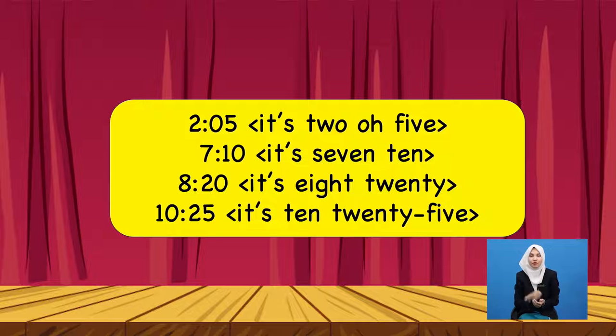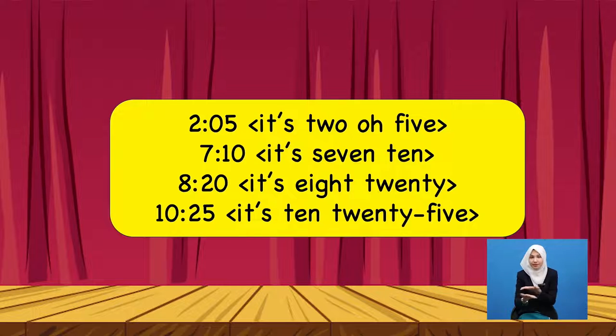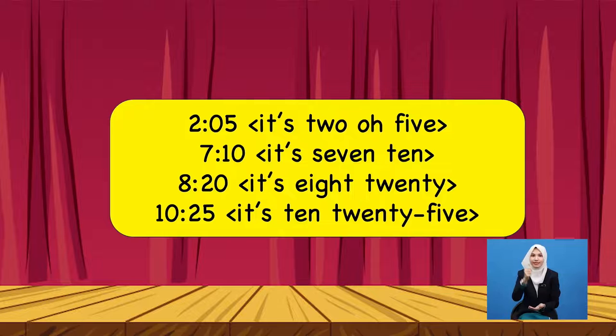For this lesson, we are going to learn that there is also another method of telling the time. We can say the hour and then the number of minutes. We say 'oh' but we don't say it as zero when we have the number of the minute. For example, when we see two hours and five minutes, we say it as 'two oh five'. And here it's seven ten — seven is the hour and ten is the minutes. It's seven ten. It's eight twenty. It's ten twenty-five.